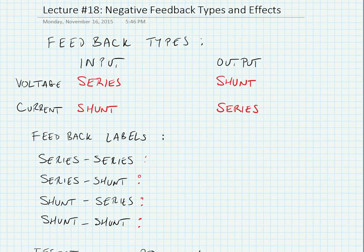We label our feedback by the type of connection we have at the input and the output. For instance, if we have a series connection at the input and a series connection at the output, we call it series-series feedback, and this means that we have a voltage at the input and a current at the output. This means that we would have a transconductance amplifier.